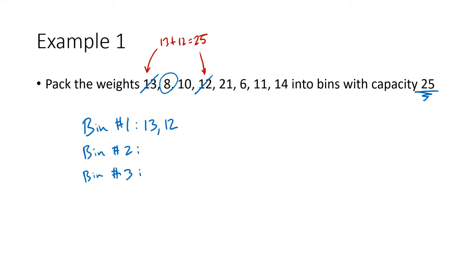The next number I see is this 8. If I think, well, 8 plus 17 is 25, but I don't see a 17 on my list. So maybe I'll put the 8 in this bin with this 10 that comes next. So 8 and 10, cross those out.